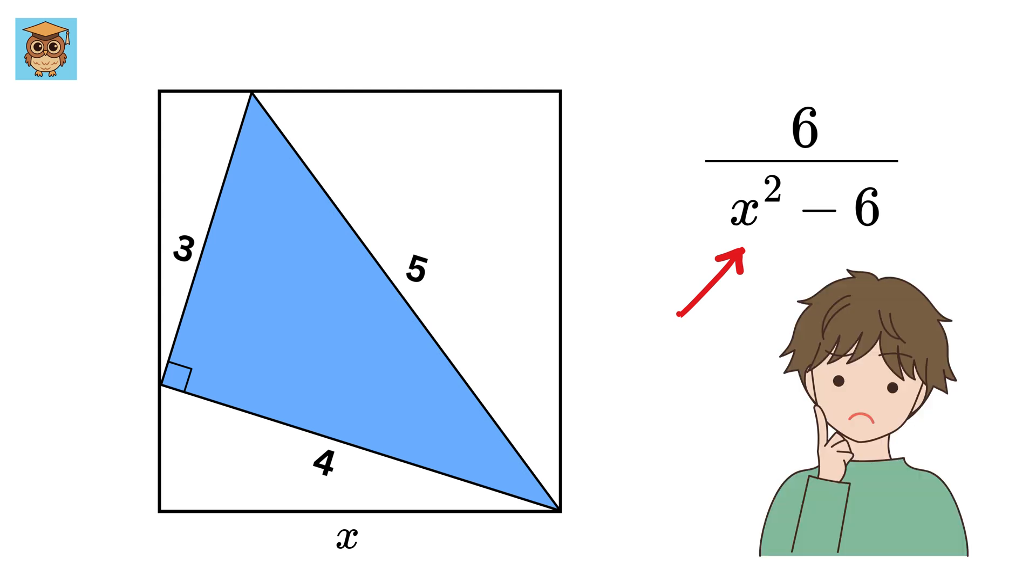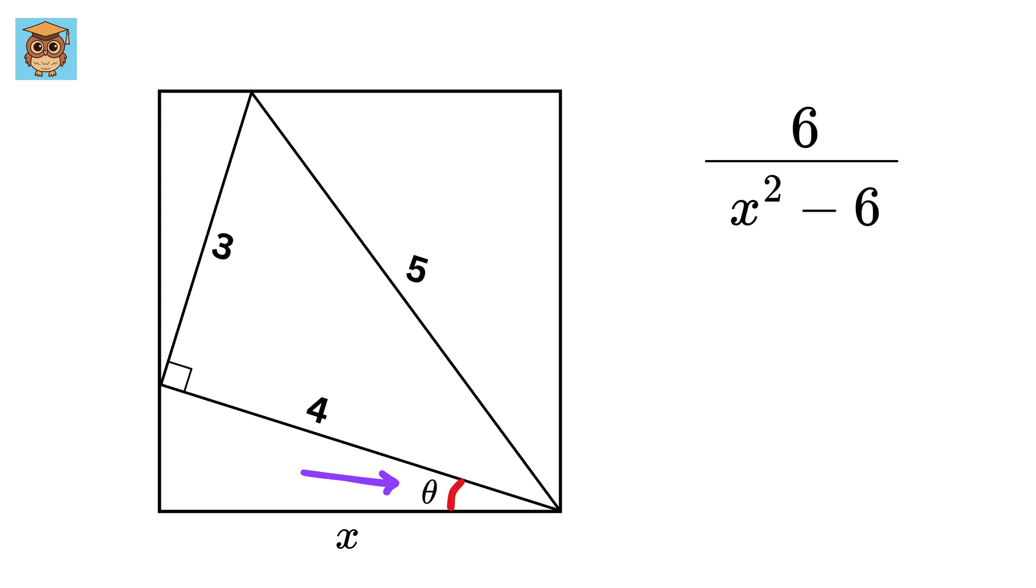But how can we determine this X? Here comes the magic. Label this angle as theta, and this side of this smaller triangle as Y. So, this side length will be equal to X minus Y, isn't it? Now, this angle will also be 90 degrees, right? So, this angle will be 90 minus theta.